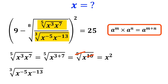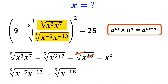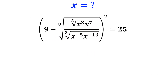Also, instead of the expression the cube root of x to the power of negative 5 times x to the power of negative 13, we can write the cube root of x to the power of negative 18. The power of 18 cancels out with the cube root and it simplifies to x to the power of negative 6.